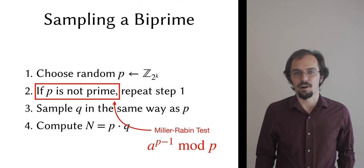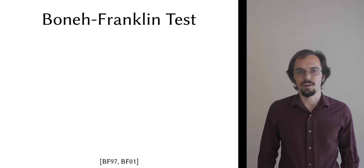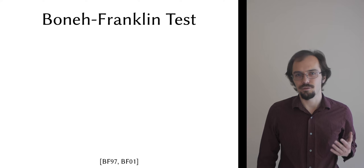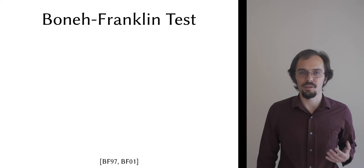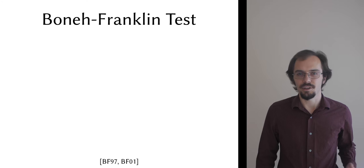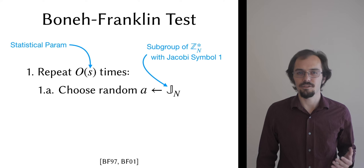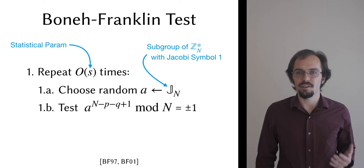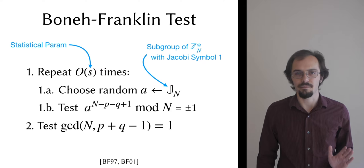Boneh and Franklin were the first to recognize this, and in the seminal paper on the topic they devised a more efficient test in the semi-honest setting. Rather than testing the primality of two individual numbers, they devised a direct biprimality test that only uses the product of the two primes, which is to say the candidate biprime n. For some statistical parameter number of iterations, they choose a random base a with Jacobi symbol 1 and take it to the power of n minus p minus q plus 1 mod n. And if this is equal to plus or minus 1 in all iterations, then the test passes. For technical reasons they also require a GCD test, but we won't worry about that for now. The key here is that the modulus n is the public output of the protocol.